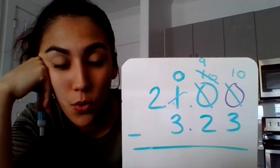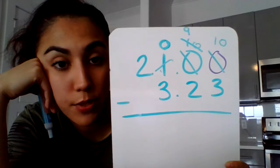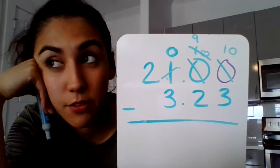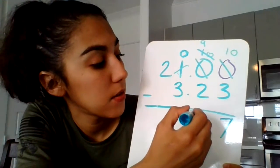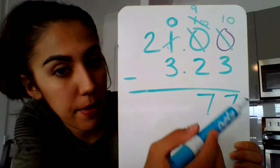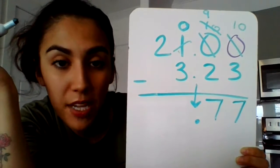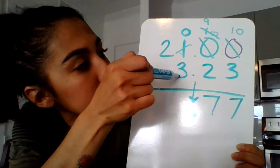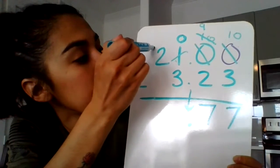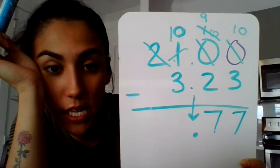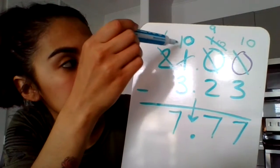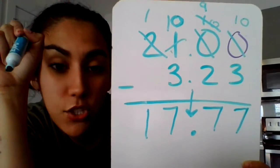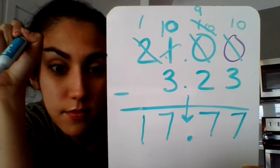Starting in the smallest place value — the hundredths: 10 minus 3 is 7. Then 9 minus 2 is 7. Drop the decimal. Can I give Jordan three pieces of candy with zero? No, so my neighbor gives me one — that zero becomes a 10. 10 minus 3 is 7. That 2 becomes a 1, and bring it down. Our final answer is 17 and 77 hundredths. Write that in the column labeled 'Decimals.'